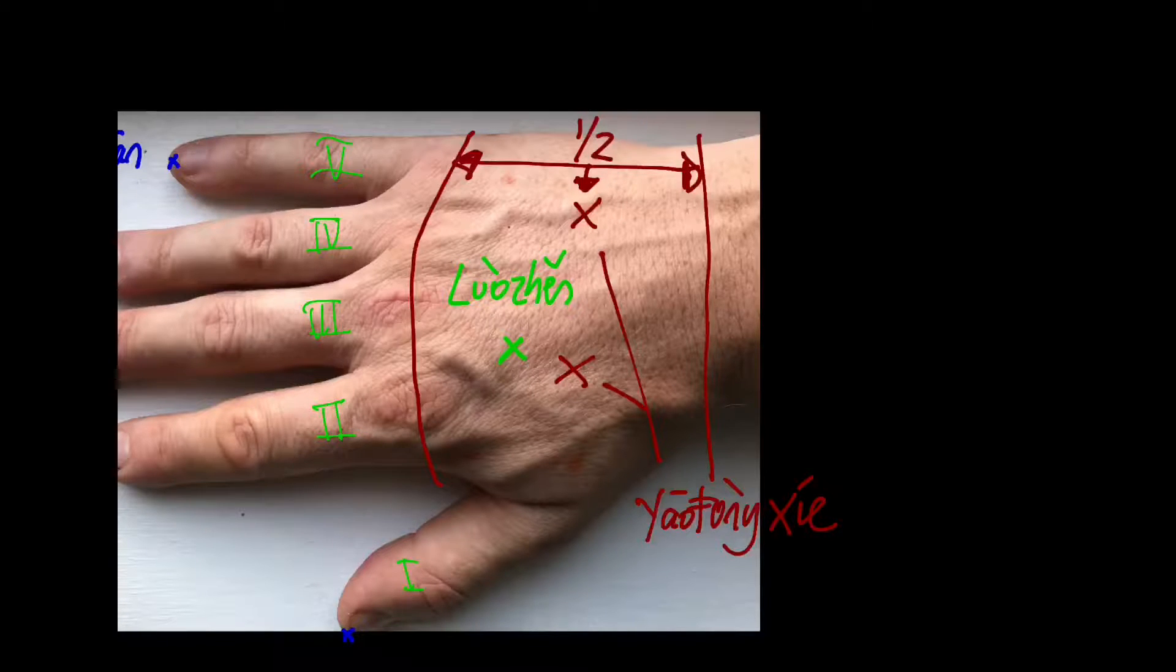Low gen is found opposite where you would find pericardium 8, at the flare of the head of the third metacarpal.